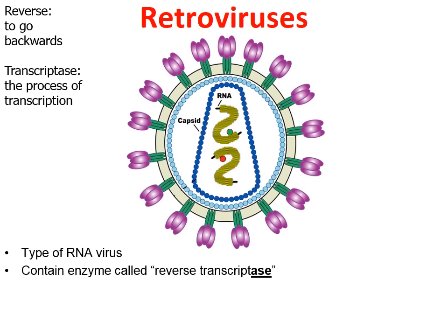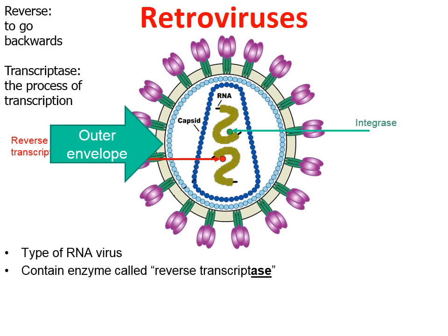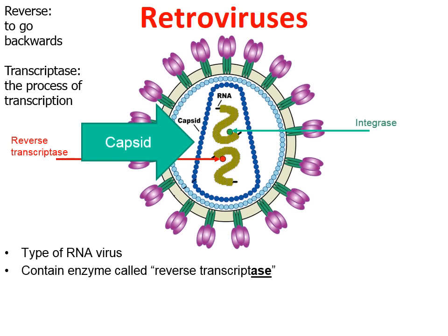In this picture, there's a red circle labeled reverse transcriptase, and there are other enzymes in the retrovirus as well. One very important enzyme is called integrase. Notice there's also an outer envelope that surrounds the entire retrovirus,